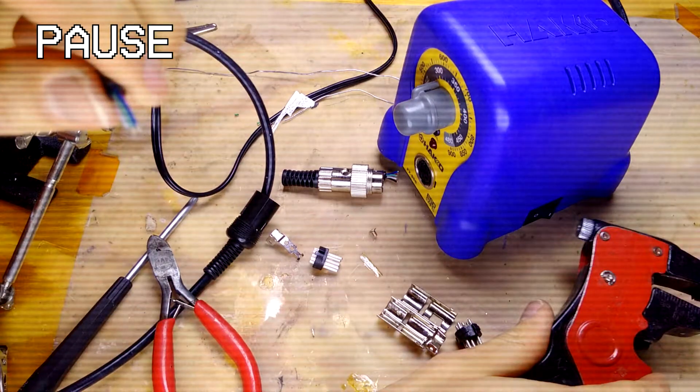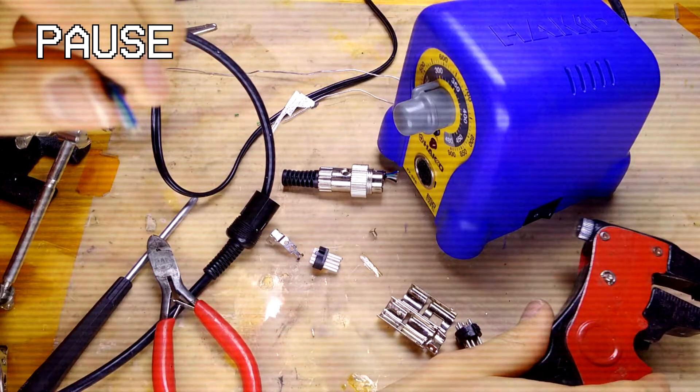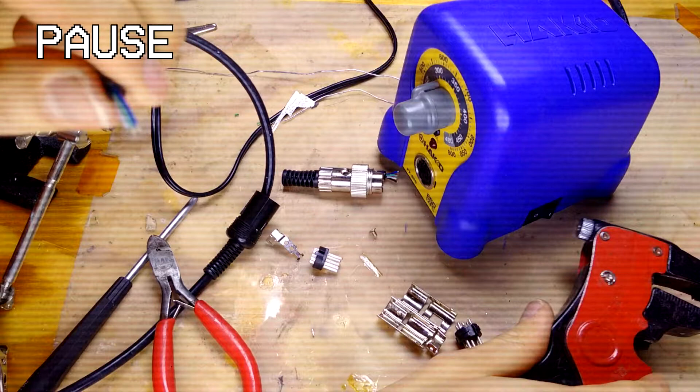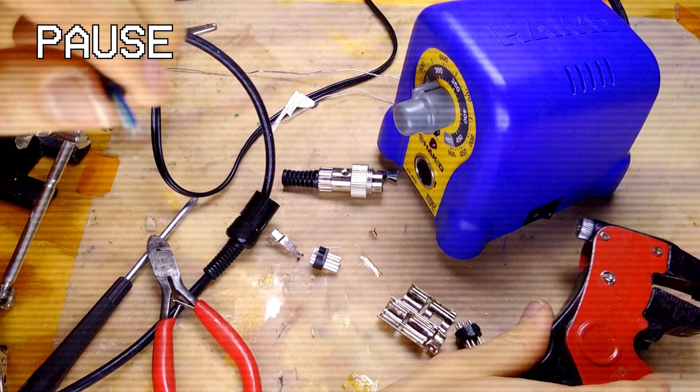Before the new connector is soldered on, remember to put the casing of the new connector onto the cable. I forgot to do it in this scene and had to unsolder the connector, put the casing onto the cable, and resolder the wires onto the connector. A major pain.